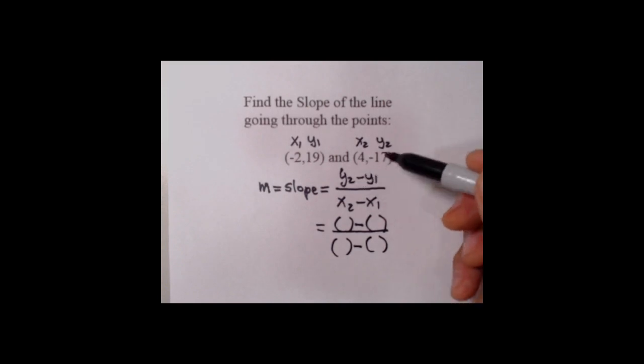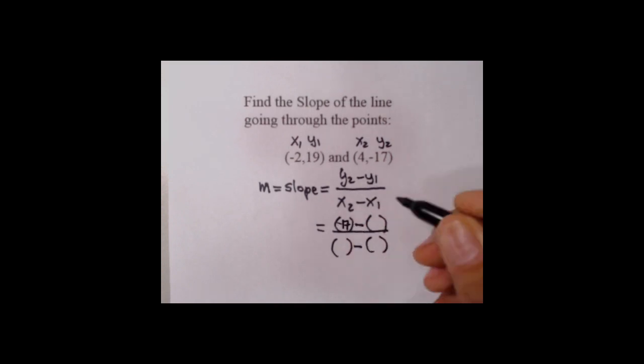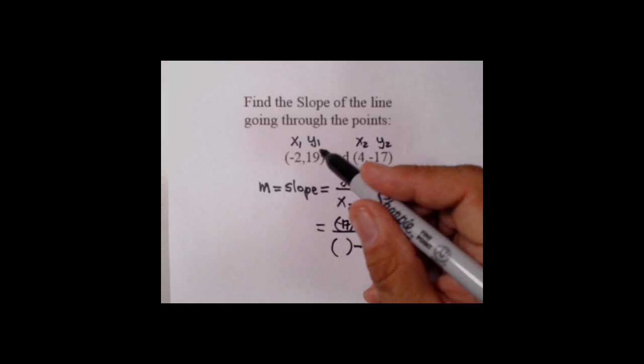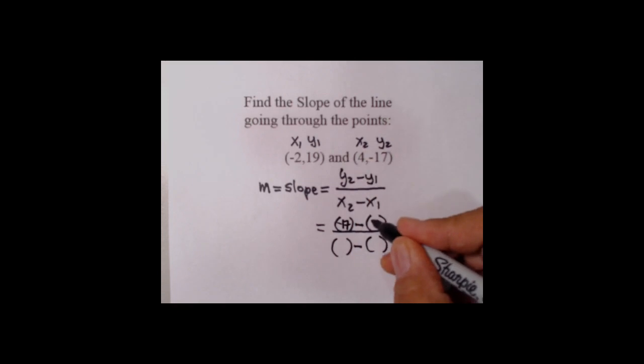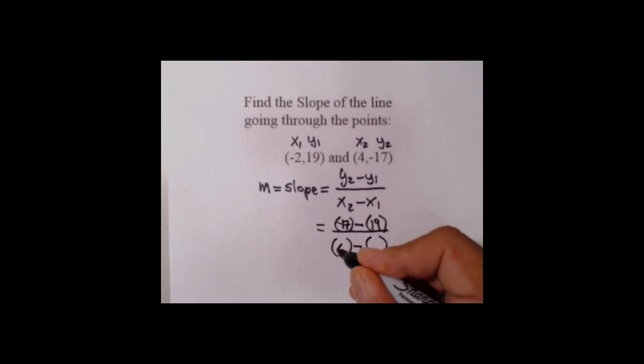Be careful getting everybody in the right spot. Y2 is the top left value, it is negative 17. Y1 is the top right value, it is 19. Downstairs, X2 is the bottom left guy, it's 4. X1 is the bottom right guy, it is negative 2.